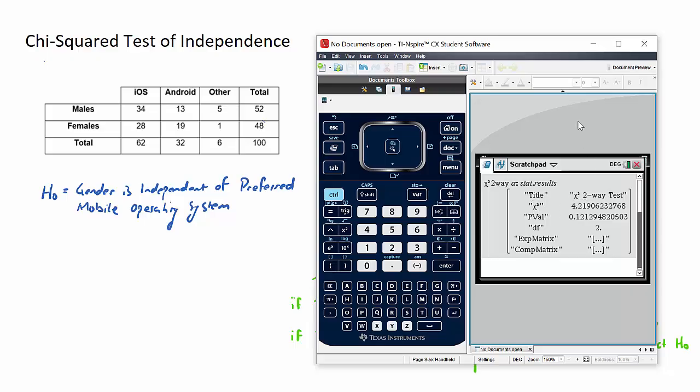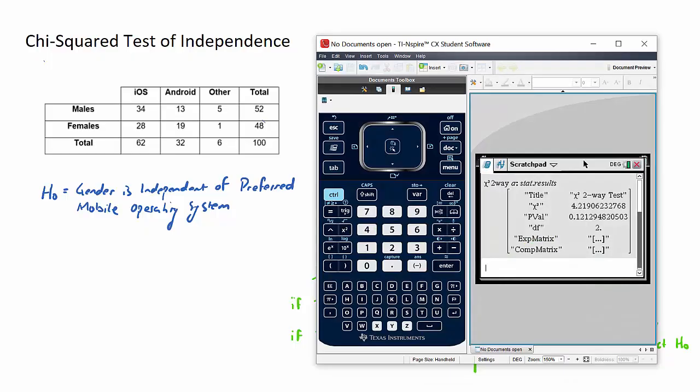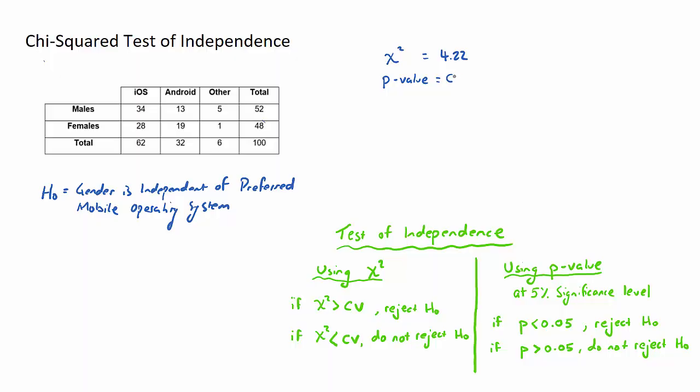Our chi-squared value is 4.22, and our p-value is 0.121. These are the two important pieces of information. We can then use this to determine whether we are going to reject this null hypothesis or not, the fact that the two variables are independent.